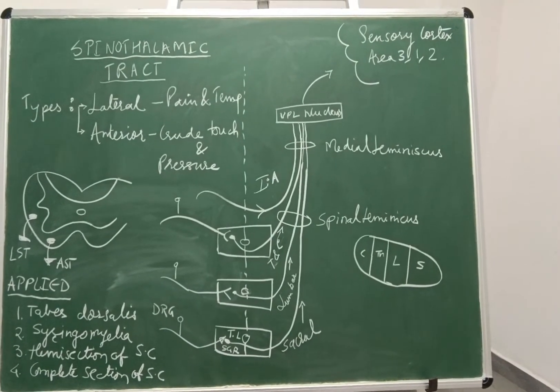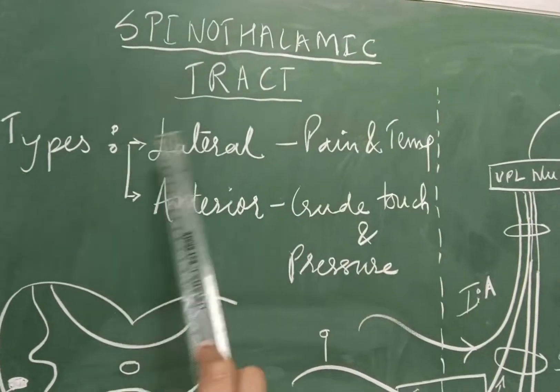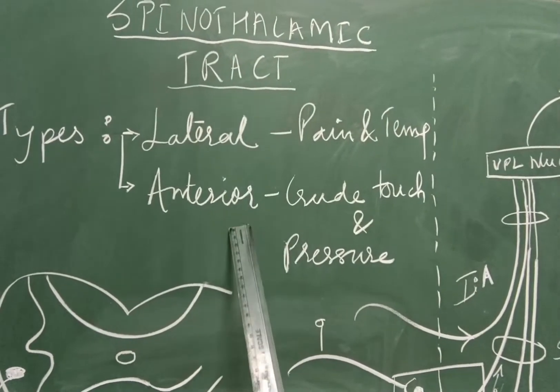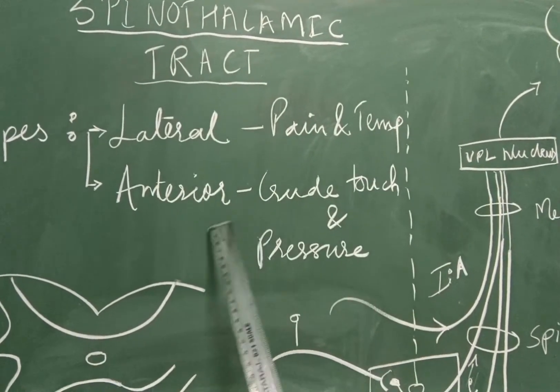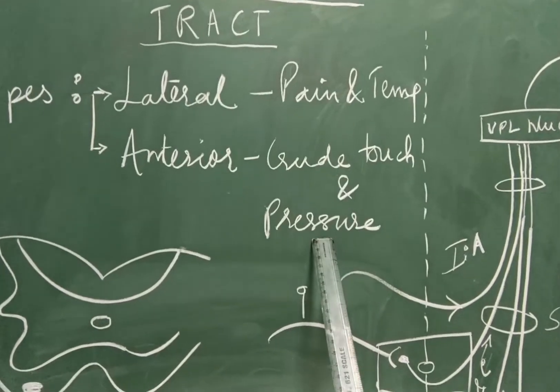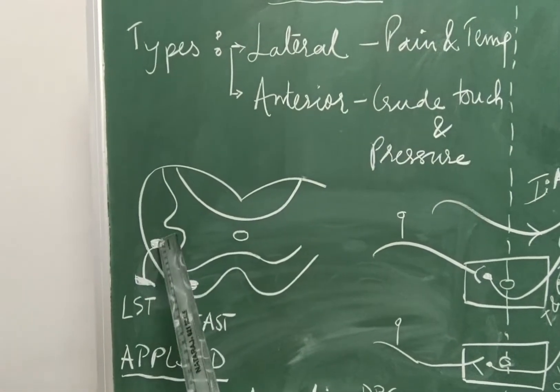So students, this is the structure of spinothalamic tract. There are two types: lateral spinothalamic tract and anterior spinothalamic tract. Lateral carries pain and temperature and anterior carries crude touch and pressure. The sensations are carried from opposite side of the body.